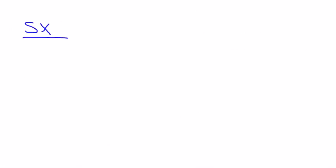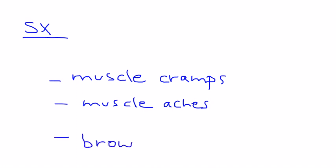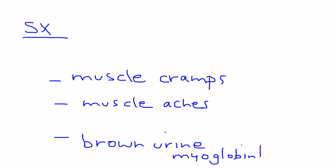What are the symptoms if someone develops this side effect? The symptoms are essentially muscle-related — muscle cramps, muscle aches. That's how the patient would describe it. Sometimes, if it's serious enough, you can get brown urine, because the myoglobin that is breaking down causes discoloration of the urine.